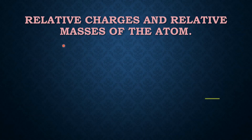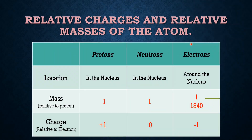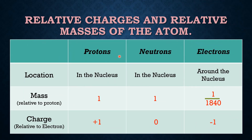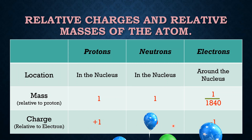We will now discuss the relative charges and masses of subatomic particles: protons, neutrons, and electrons. Protons and neutrons have similar mass, but electrons have a mass of 1/1840 relative to protons. In terms of charge, protons carry a charge of +1, neutrons carry 0, and electrons carry -1.